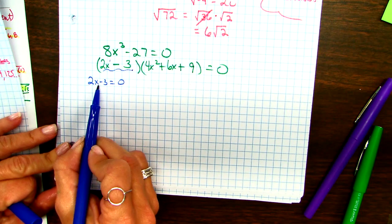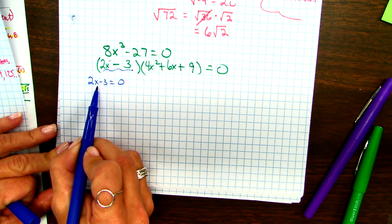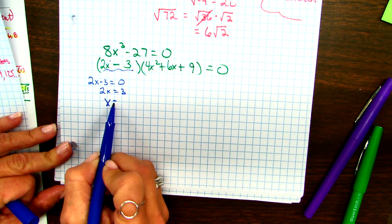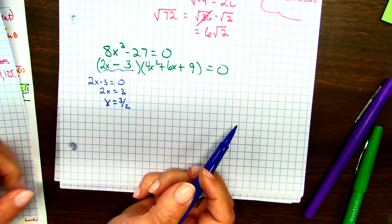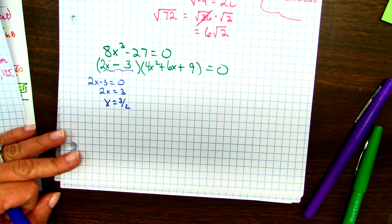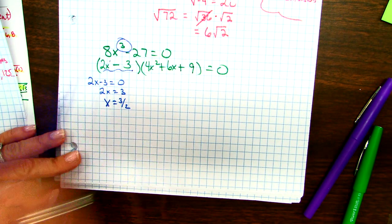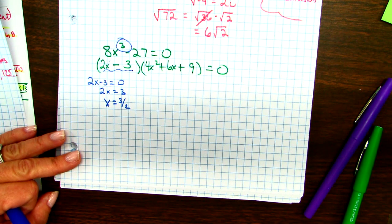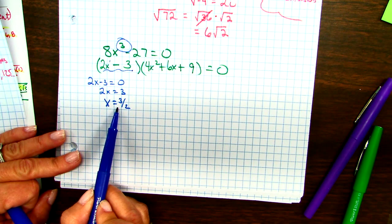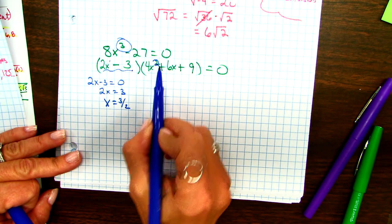Whenever we have a sum or difference of two cubes, you'll have like an easy one. It'll be a linear. So just set that equal to 0 and solve. And you don't have to show every step, guys. I don't need to see the plus 3. When you move that to the other side, it becomes positive. Divide by 2. We get 3 halves or 1.5. That's one of our solutions. We're going to have three solutions. We always have the same number of solutions as our degree. This is degree 3. There's one of them.